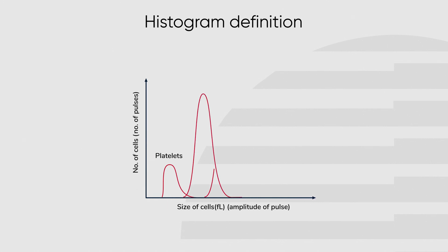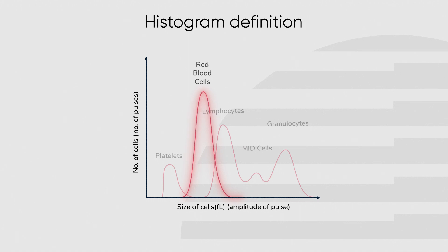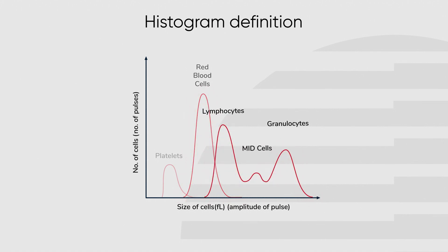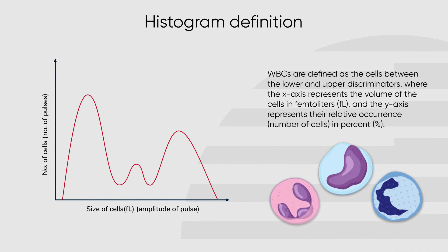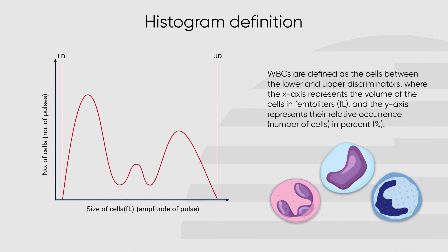In a three-part hematology system, blood cells are counted and assessed using impedance technology and displayed in three separate histograms: platelets, red blood cells, and white blood cells. White blood cells are defined as the cells between the set lower and upper discriminators, where the x-axis represents the size of the cells in femtoliters and the y-axis represents the number of cells.